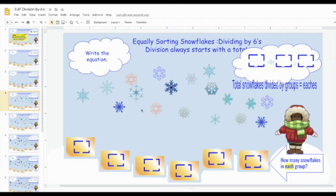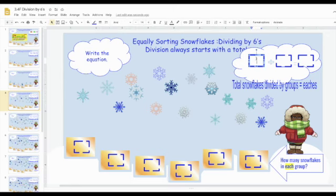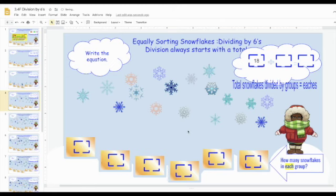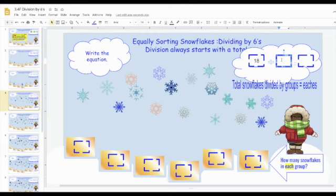First, I have to do what? I have to know my total. So division always starts with the total. So count your snowflakes. Two, four, six, eight, 10, 12, 14, 16, 18. I have 18 snowflakes. Division always starts with the what? The total. 18. How many sorting groups? I'm putting them to groups of six. How many snowflakes in each group?